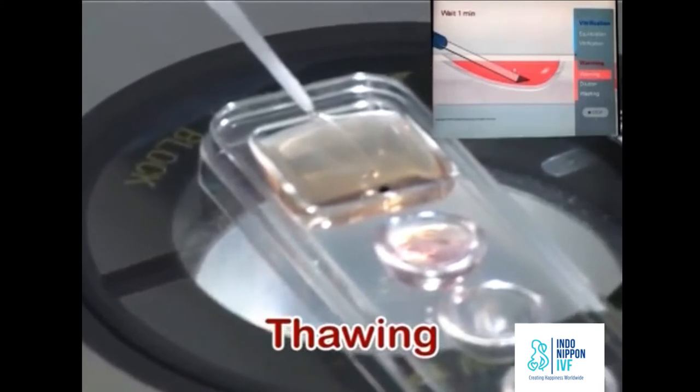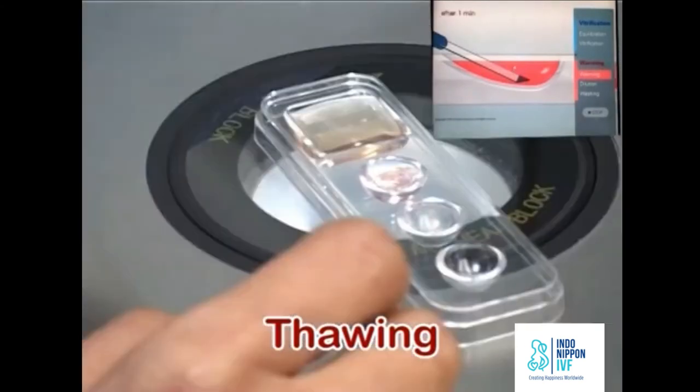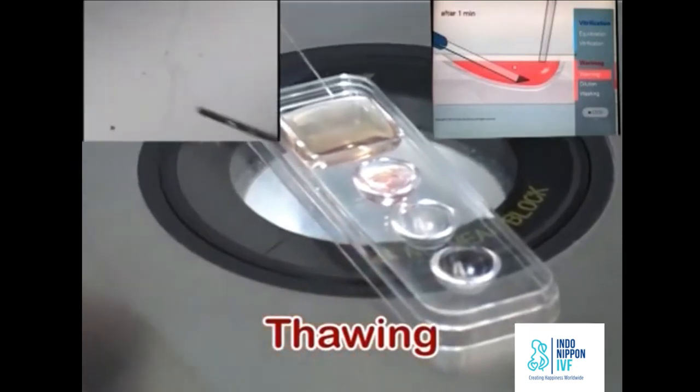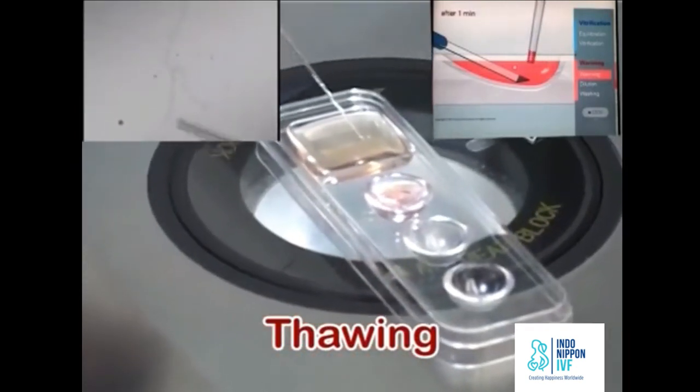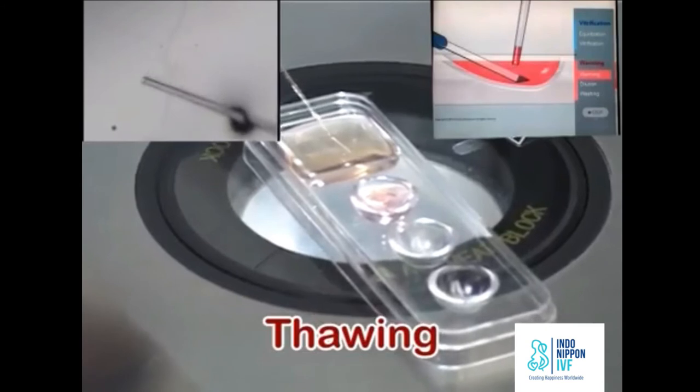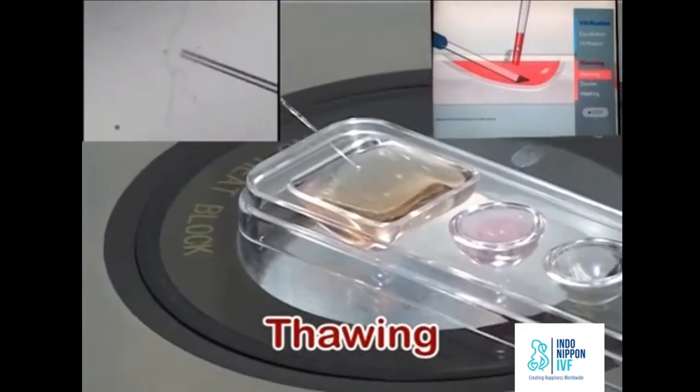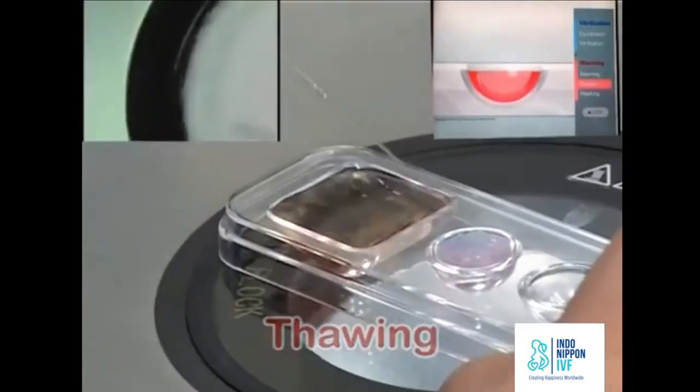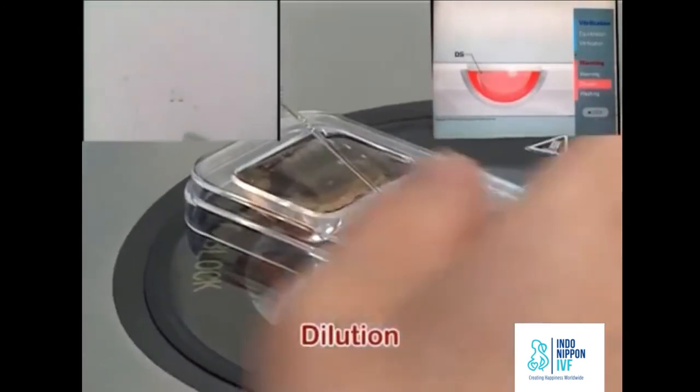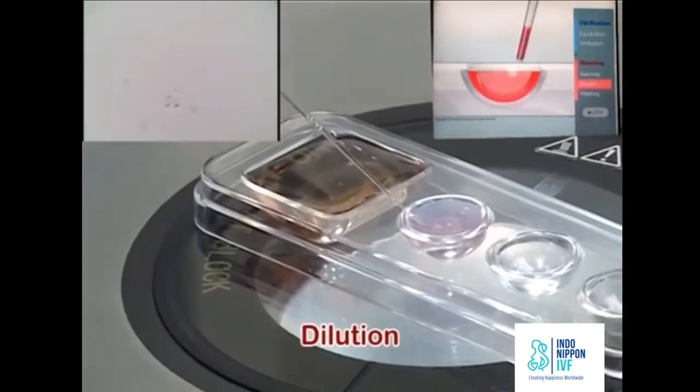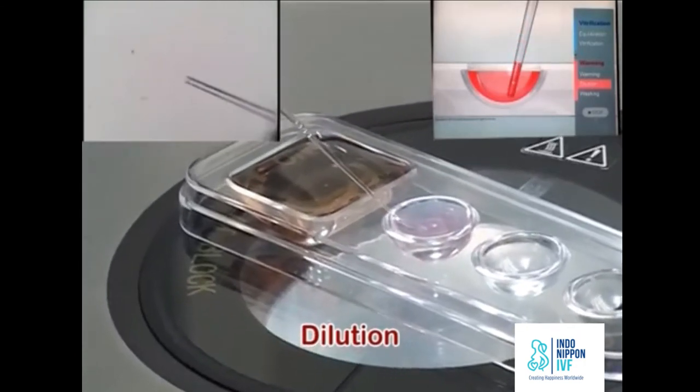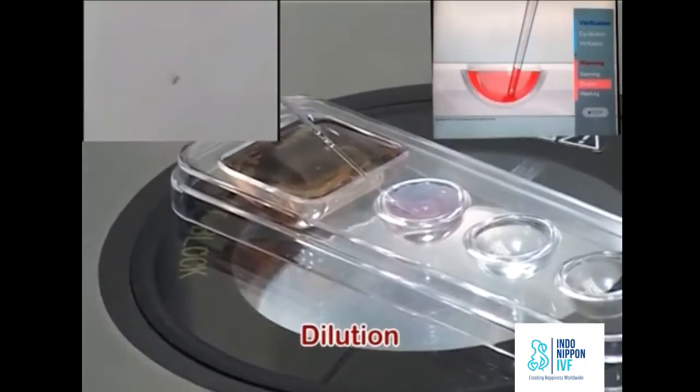Oocyte separates from the cryotech sheet by itself and begins to float. Confirm the oocyte existence in the TS well. Do not touch the oocyte for 1 minute. At the end of 1 minute, gently aspirate the oocyte and also aspirate TS till 3 mm length into the pipette. Transfer TS to the bottom center of DS and gently put the oocyte at the bottom of TS layer in DS well.